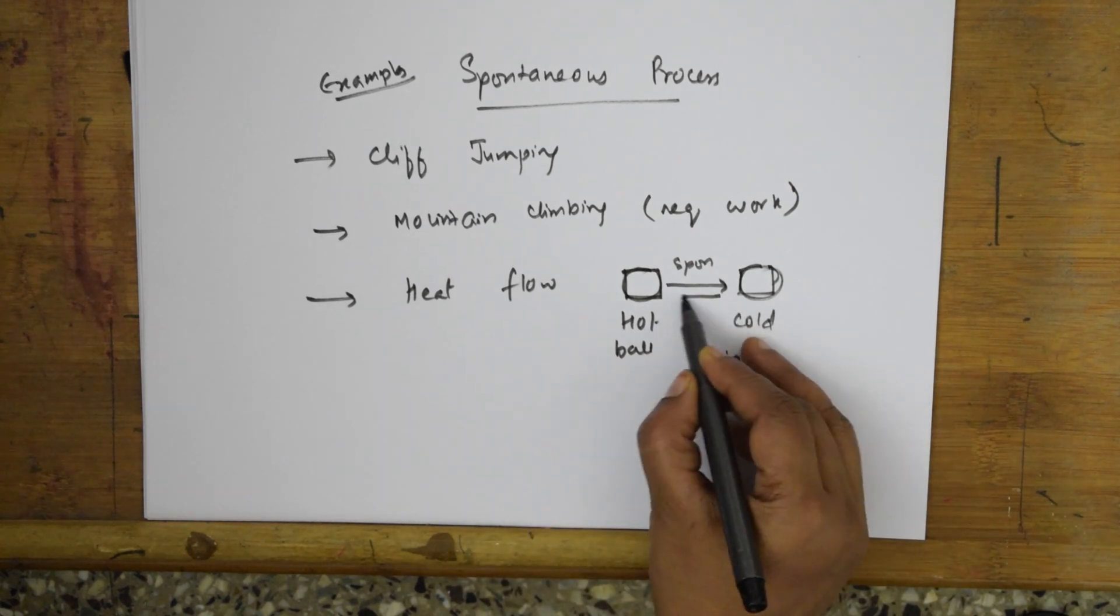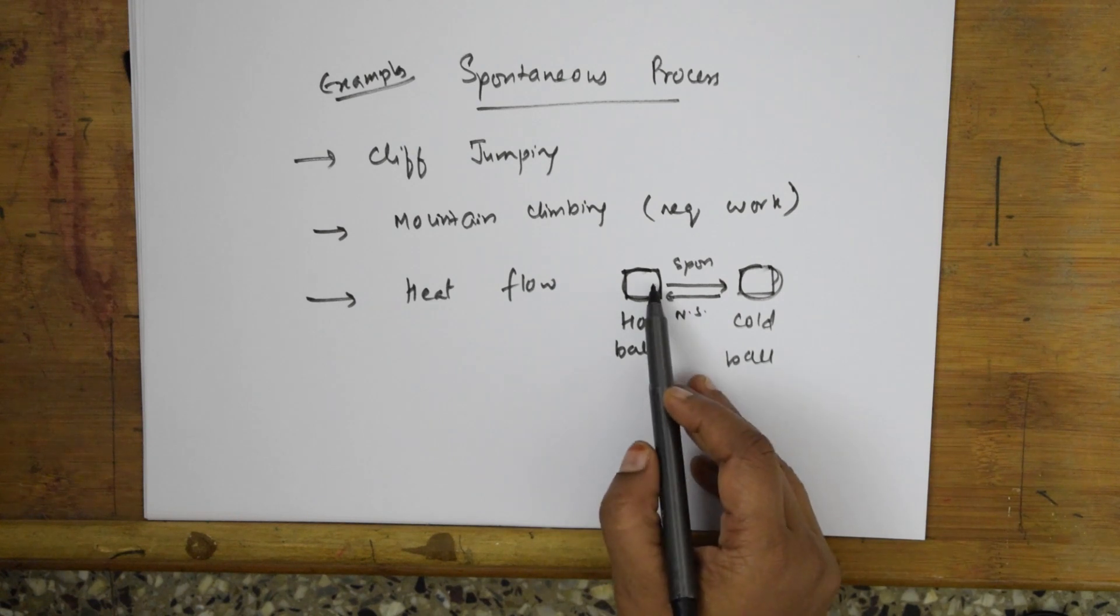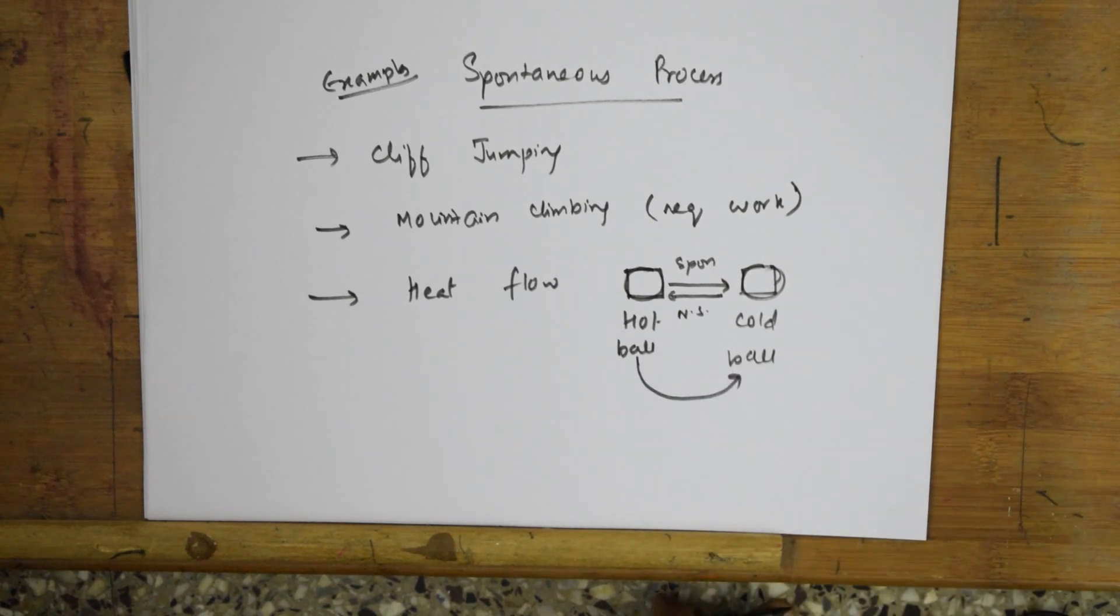When it goes from cold to hot, it is a non-spontaneous reaction. For heat flow from hot body to cold body is a spontaneous reaction. All these are certain examples of spontaneous reactions.